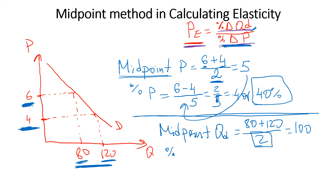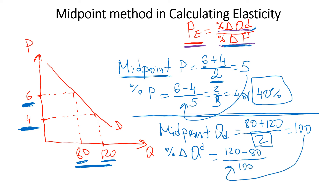For the percentage change in quantity demanded, we follow the same steps as we did for price. We subtract the two quantity values — I take the higher number minus the lower number — and divide by the midpoint of 100. So we get 40 over 100, which equals 0.4 or 40%.